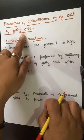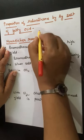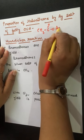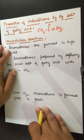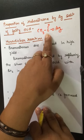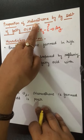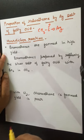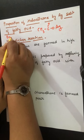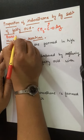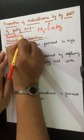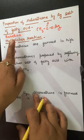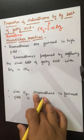Now, with the silver salt of fatty acids — silver salt of fatty acids means something like CH₃COOAg — we look at the Hundsticker reaction, and this is actually the Borodine-Hundsticker reaction. The complete name is Borodine-Hundsticker reaction.